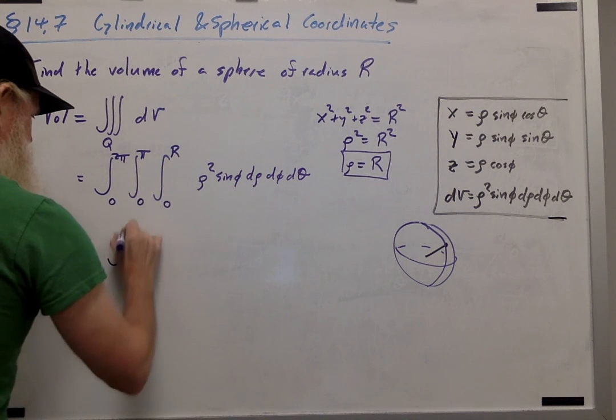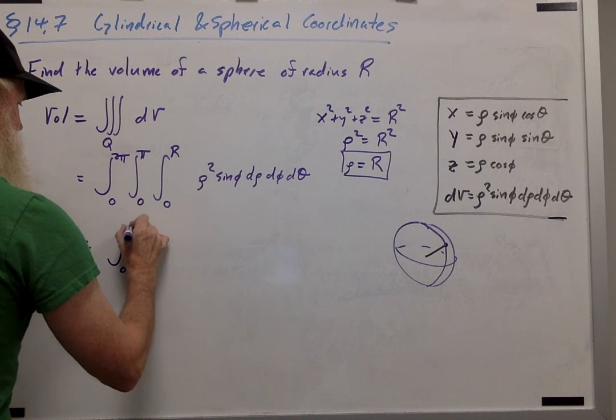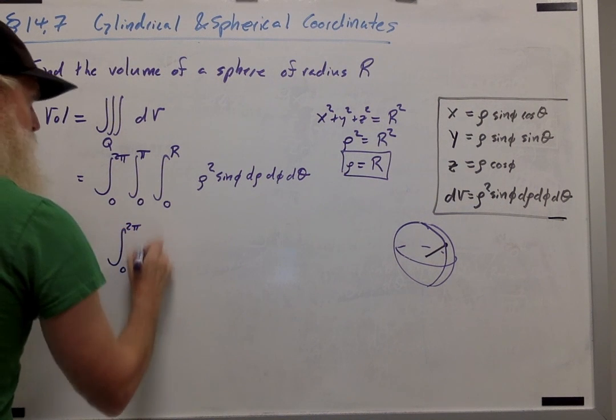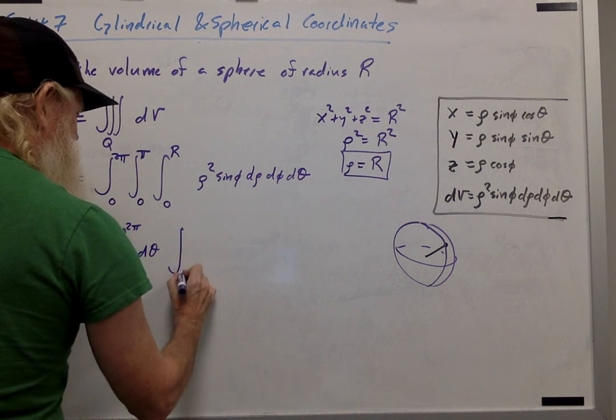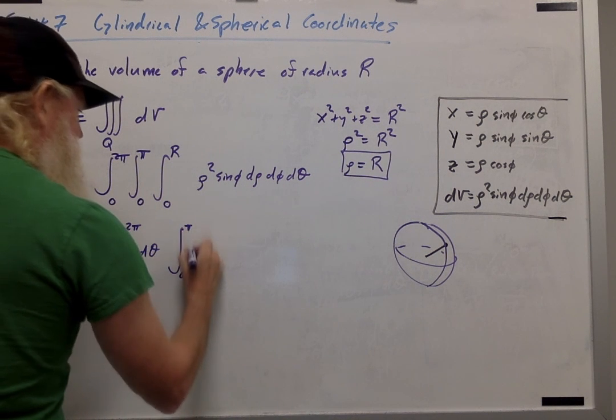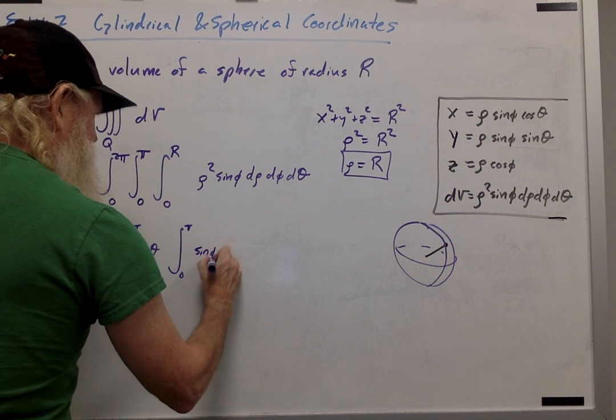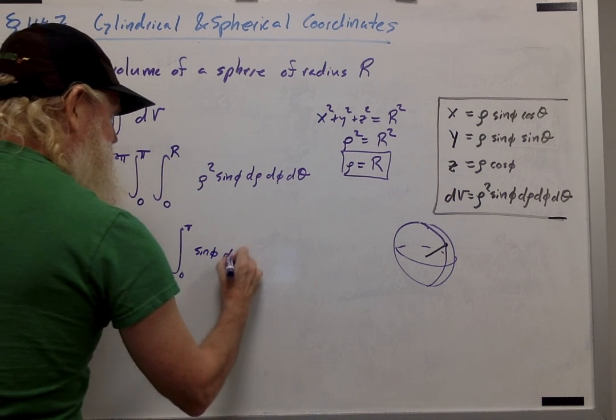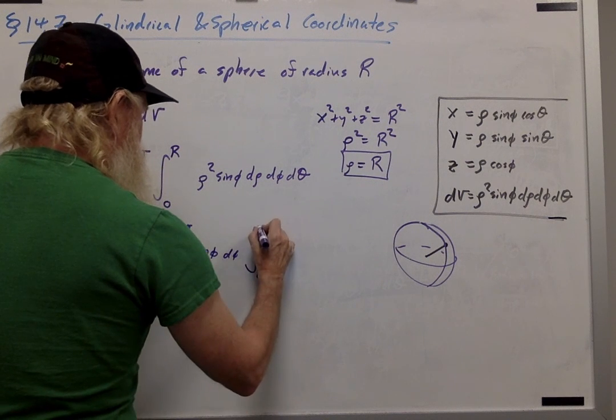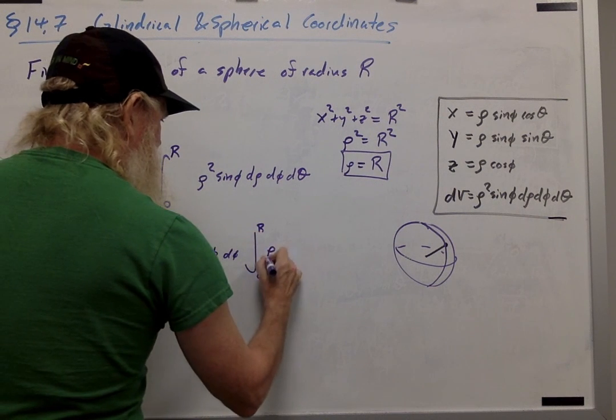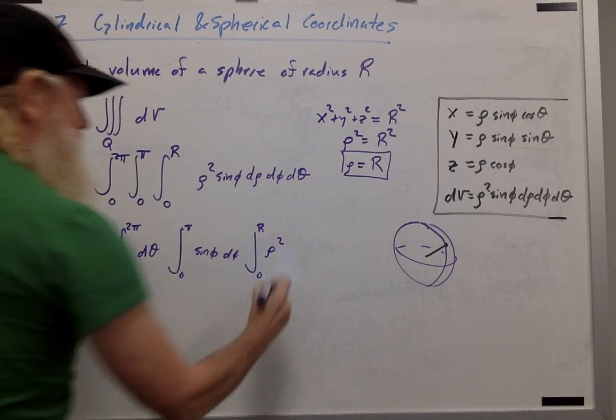So I can break this up as the product of three separate integrals. The integral from 0 to 2 pi of just 1 d theta times the integral from 0 to pi of sin phi d phi times the integral from 0 to r of rho squared d rho.